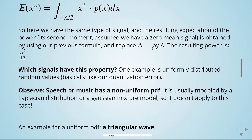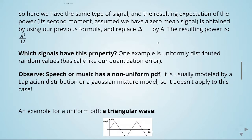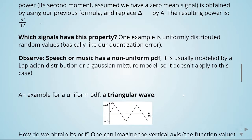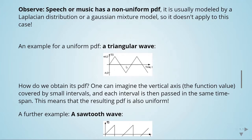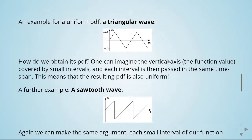What kinds of signals have this property? Uniformly distributed random values have this property, similar to our quantization error. However, it's important to note that speech, music, and audio have a non-uniform PDF — they are usually modeled by a Laplacian distribution or a Gaussian mixture model, so this formula doesn't apply to them. Other signals that do have a uniform PDF are the triangular wave and the sawtooth wave, because each amplitude interval is traversed for the same time span, resulting in a uniform distribution.